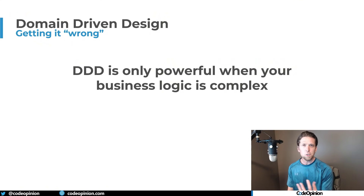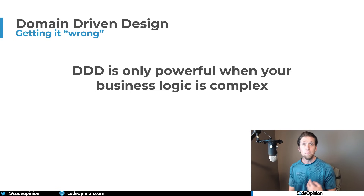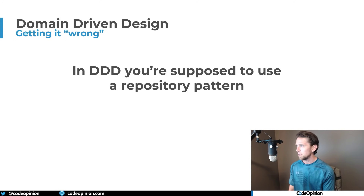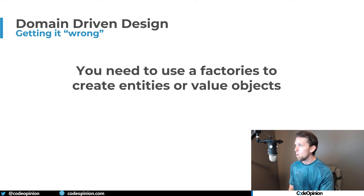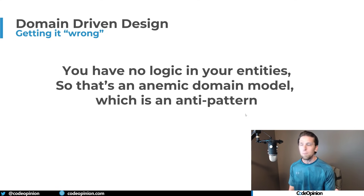Here are some statements and questions I constantly see on the internet that I think sway people in the wrong direction. That DDD is only powerful when your business logic is complex. That you're supposed to use the repository pattern — there's so much arguing about the repository pattern, which proves my point about caring too much about these things. And that you need to use factories to create entities or value objects — that's what the book demonstrates.